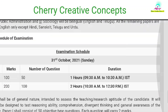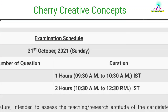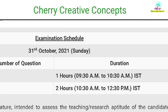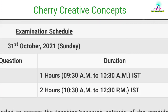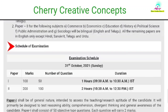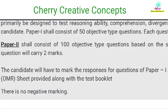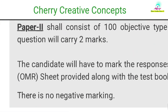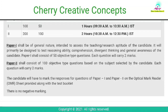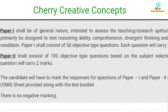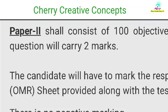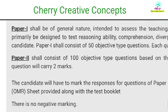In total, we have 300 marks. The exam: Paper 1 is 1 hour time, and Paper 2 is 2 hours time, so total is 3 hours — from 9:30 to 12:30. Candidates will have to mark their responses for Paper 1 and Paper 2 on the Optical Mark Reader (OMR). So it is an OMR-based exam, there is no online exam.